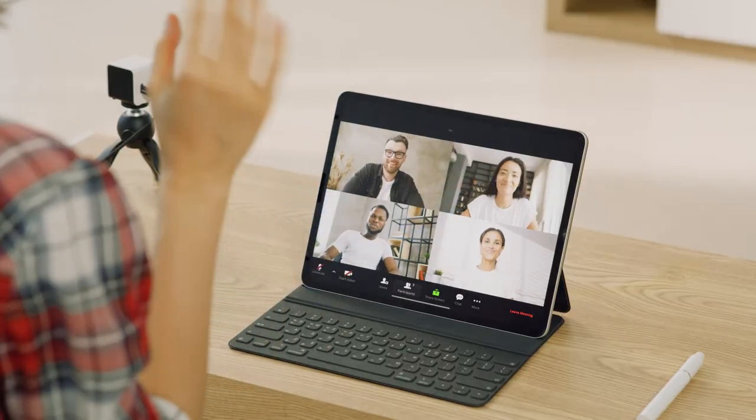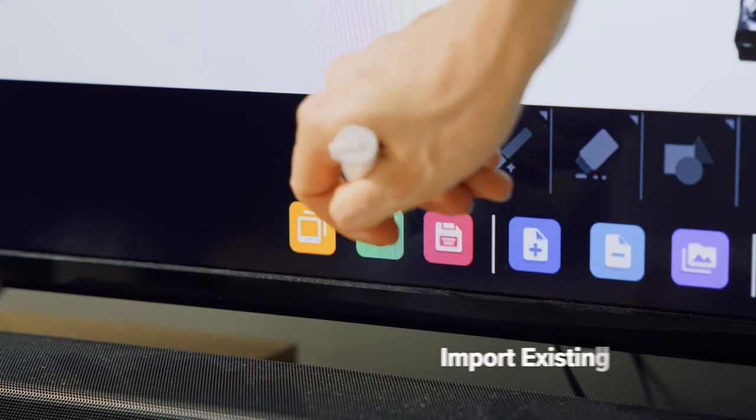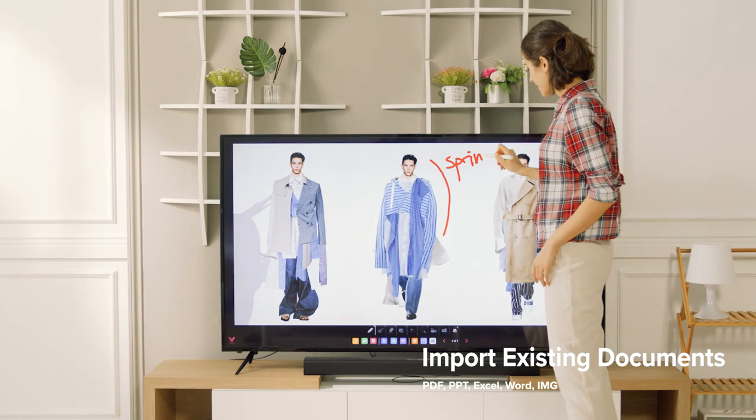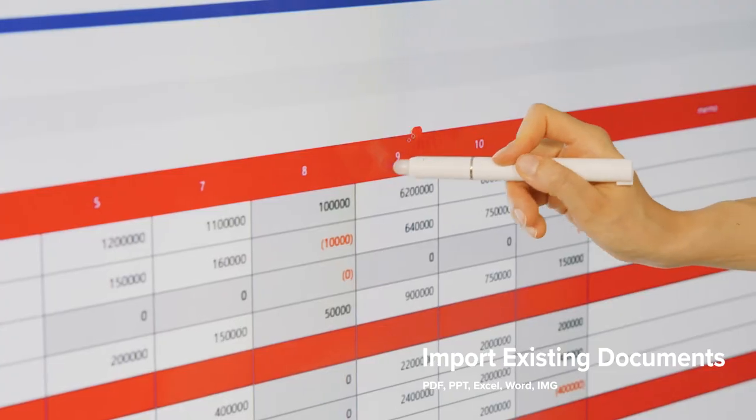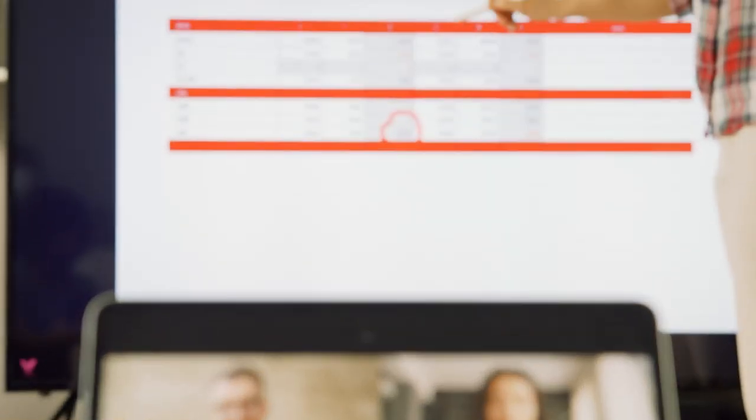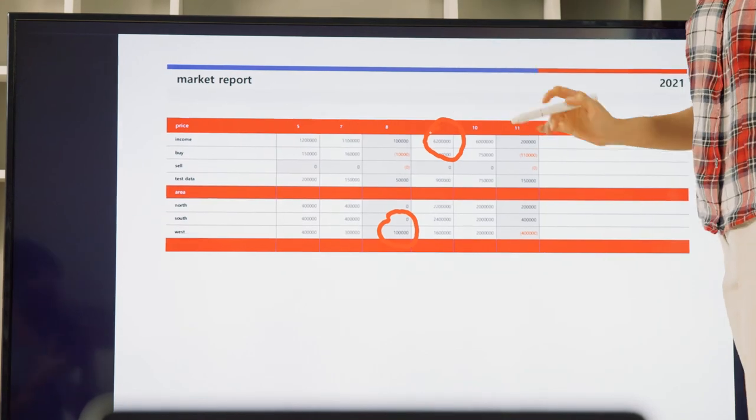Now let's take a look at how V-Board is used in virtual meetings. Import PDF, PowerPoint, Excel, Word, or an image file, and annotate directly on your work. Communicating ideas become so easy. It'll feel like you're meeting in person.